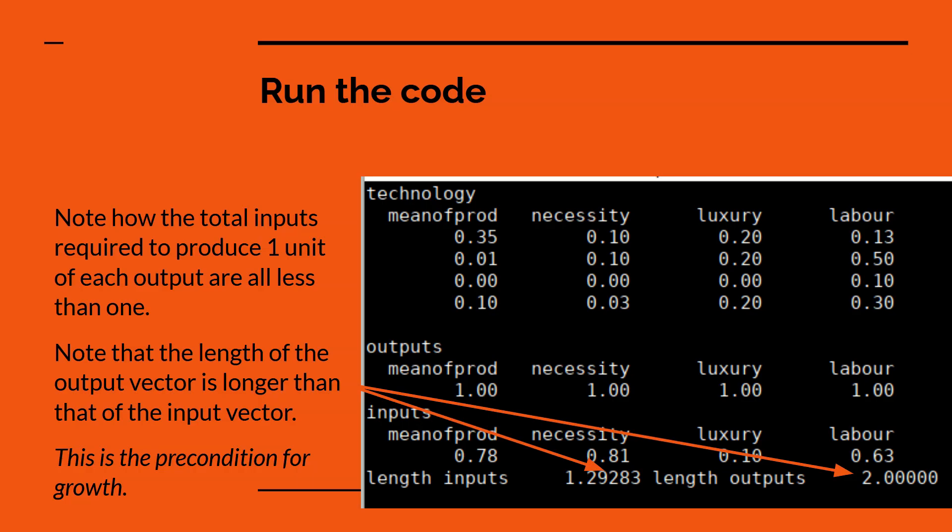It prints out what we want as outputs and it says how much inputs will be required to produce that. And this is the important thing. If we measured the length of these two vectors, the length of the output vector, the length of the input vector, the length of the input vector is less than the length of the output vector. That's a fundamental condition for an economy to survive. It must produce more output than it consumes in inputs. And vector length provides an abstract way of doing that across a multitude of different types of input.